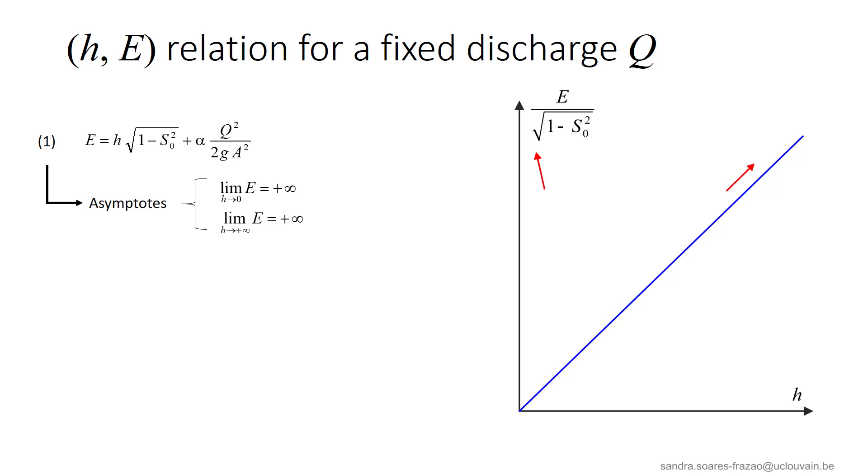From equation 1, we can also represent the specific energy as a function of the water depth for a given discharge Q. The curve representing this equation has two asymptotes. First, the vertical axis of the coordinates when H approaches 0. Indeed, if H approaches 0, A tends to 0, and the specific energy E tends to infinity here.